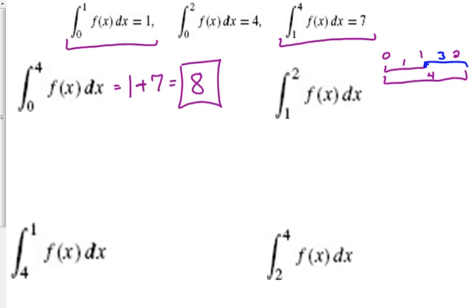So it's not really one of the rules we just looked at. It's kind of a manipulation of those rules. But if you know a longer interval and you know a portion of it, then you can subtract to get another part of it.